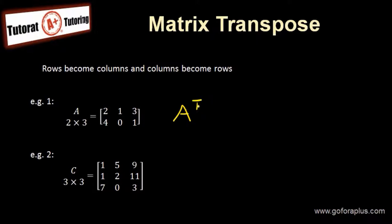We call this A transpose. Now this becomes 3 by 2 because rows become columns and columns become rows. So we alternate it.